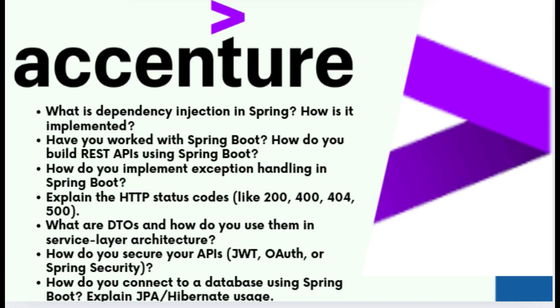The next question was: what are DTOs and how do you use them in a service layer architecture? DTOs, or Data Transfer Objects, are plain Java classes used to transfer data between layers. They help decouple the internal domain model from the response data and are often used to avoid exposing entities directly.